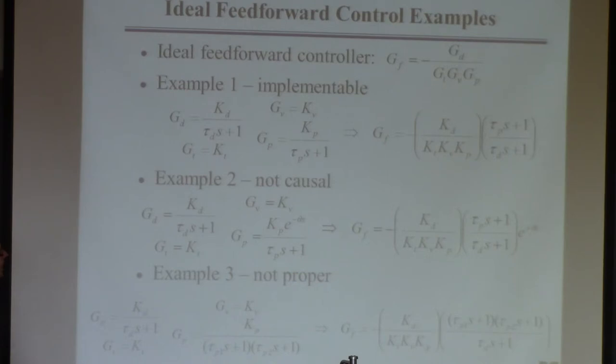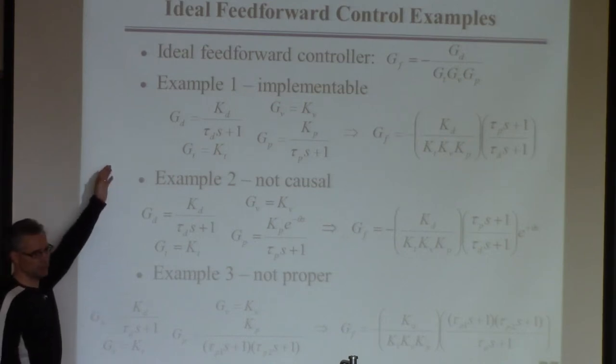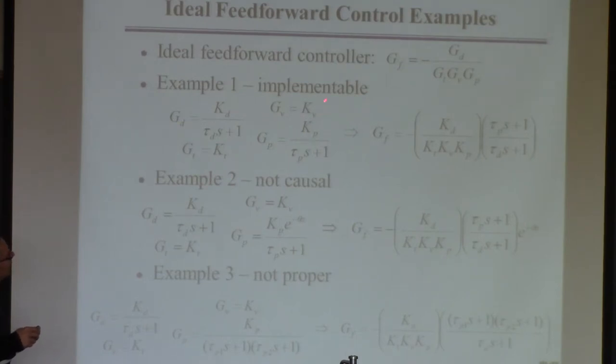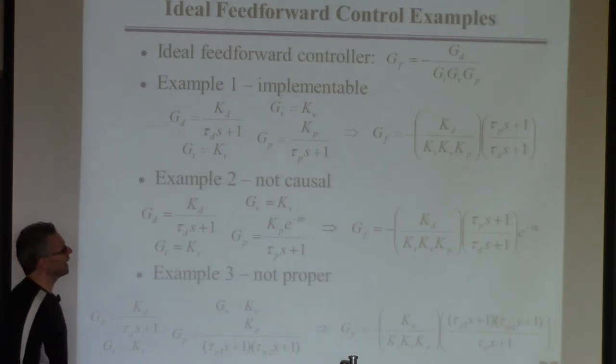All right. So here's our design equation. So I'm just trying, I'm just giving you three examples of trying to implement this equation. They're all pretty simple. I'm just going to give you all the transfer functions. I'm going to plug them in. I'm going to give you a, I'm going to tell you what the controller is. And then I'm going to tell you either you can implement that thing or you can't. Okay. So the first case is disturbance is a first order transfer function. Process is a first order transfer function. The valve is just a gain and the measurement device for the disturbance is just a gain also.